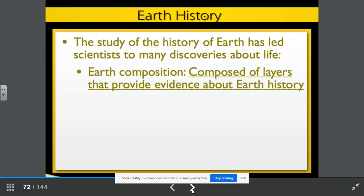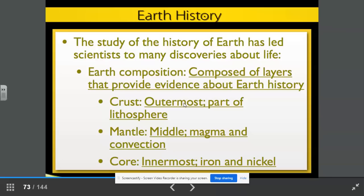Earth's history. We are now on page 10. Let's go ahead and dive in. The study of the history of the Earth has led scientists to many discoveries about life, including the Earth's composition. It is composed of layers that provide evidence about Earth history. The crust is the outermost part of the lithosphere. The mantle is the middle part. It includes magma and convection. And the core is the innermost part, and it has iron and nickel present.